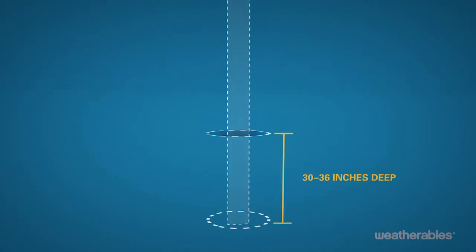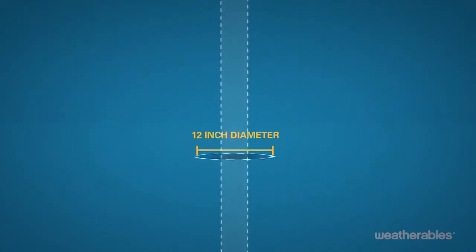A 5 x 5 inch post requires a 30 to 36 inch deep hole, 12 inches in diameter.